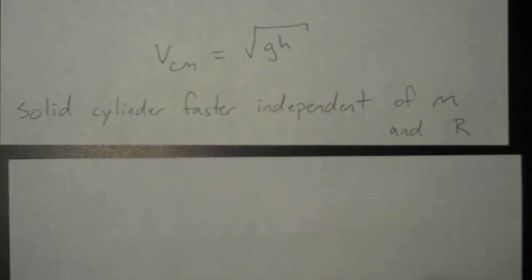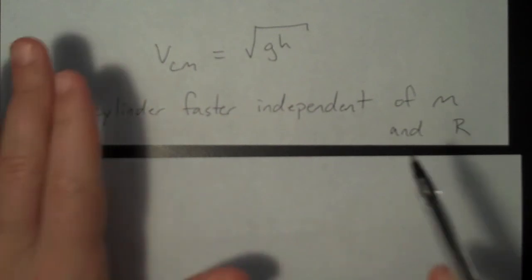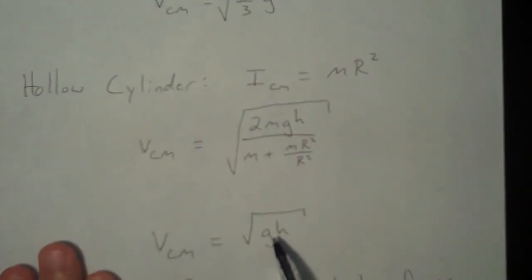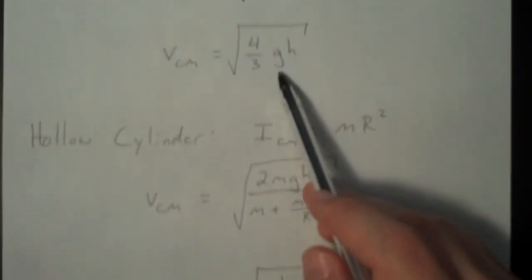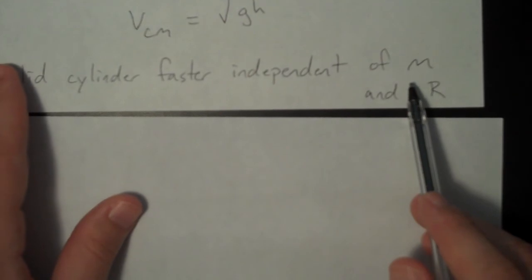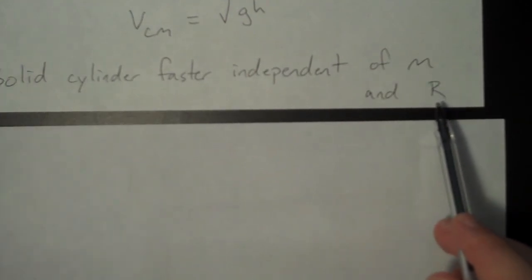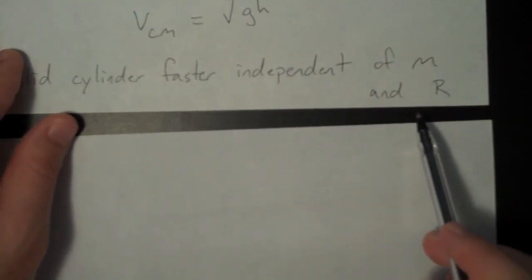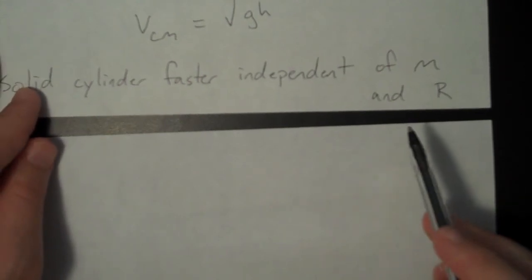This value is smaller than this one. So that means that the solid cylinder is going to roll down faster. What else do these results indicate? Notice they only depend on g and h. Both of these just depend on g and h. They do not depend on the mass of the cylinders or the radii of the cylinders.